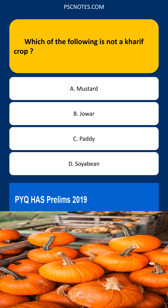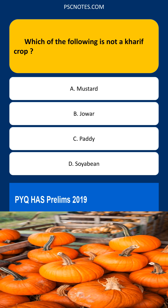Examples of kharif crops include rice, paddy, maize, jowar, bajra, toor, arhar, moong, urad, cotton, jute, groundnut, and soya bean.